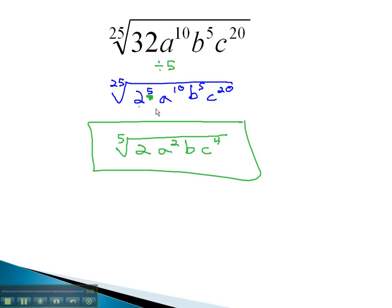By writing our number in its prime factorization, and dividing all the exponents and the index by the greatest common factor, we're able to reduce the index from 25 down to 5.